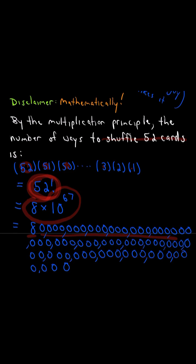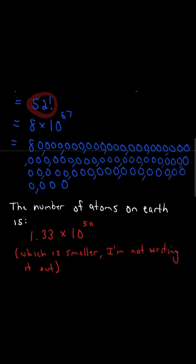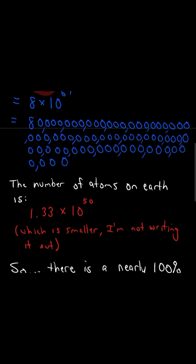So feel free to count all my zeros. Well, it turns out that the number of atoms on Earth is only 1.33 times 10 to the 50th power. So the number of atoms on Earth is actually smaller than the number of unique ways to shuffle a deck of cards.